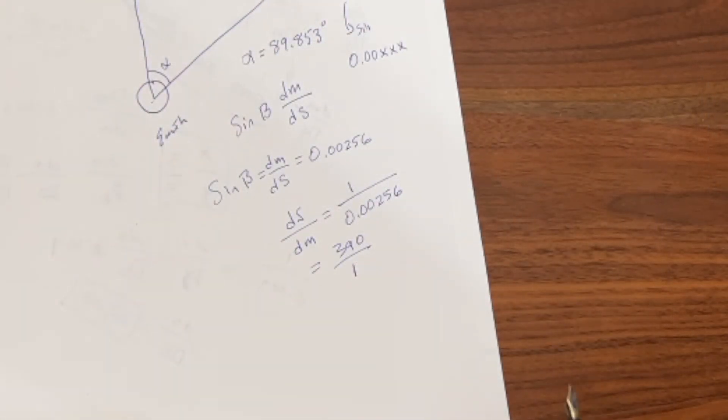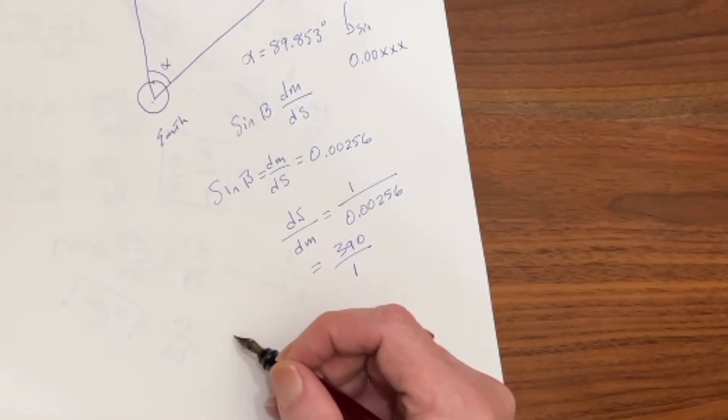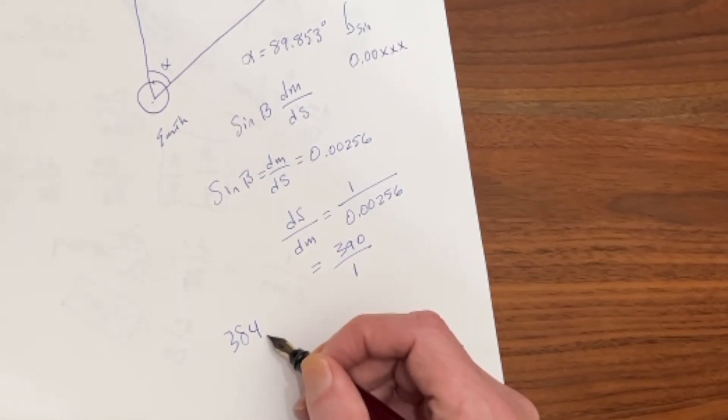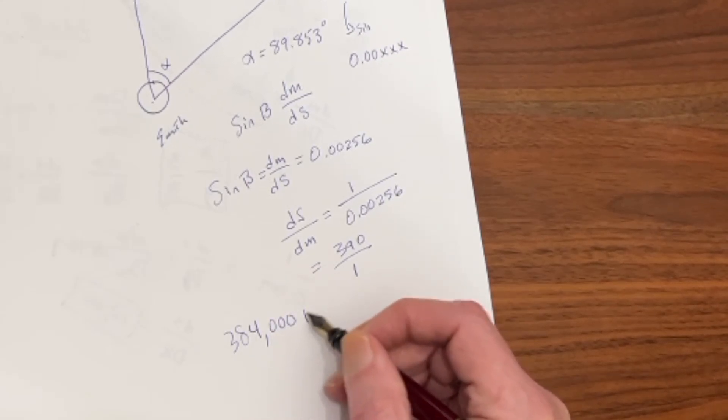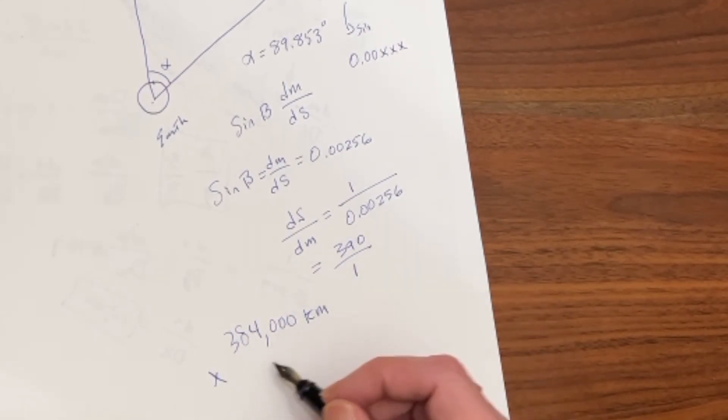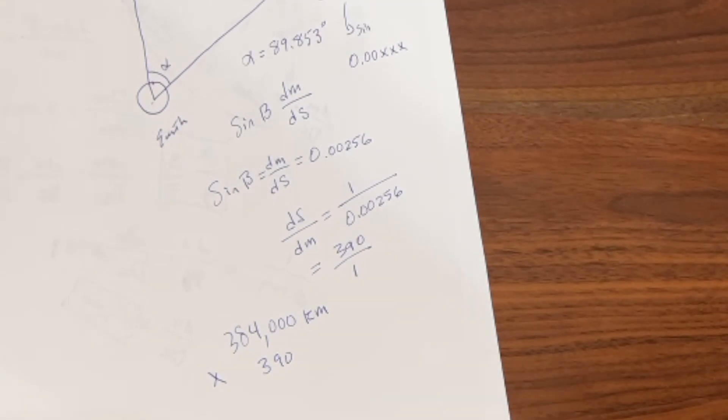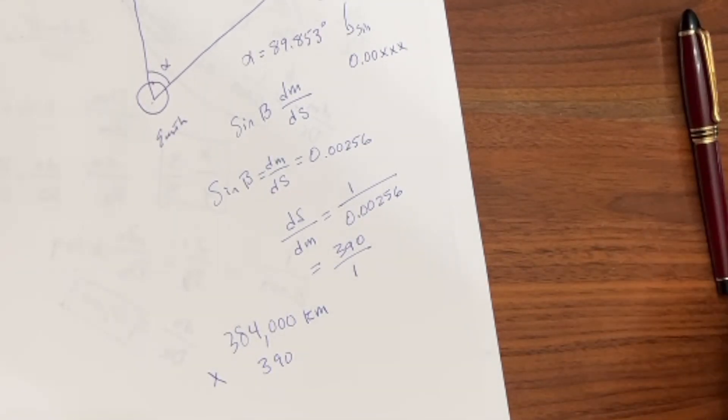All right, well, let's go ahead and calculate the distance to the sun. From our previous video, we saw the distance to the moon was 384,000 kilometers. So what we're going to do is we're going to multiply that by 390.